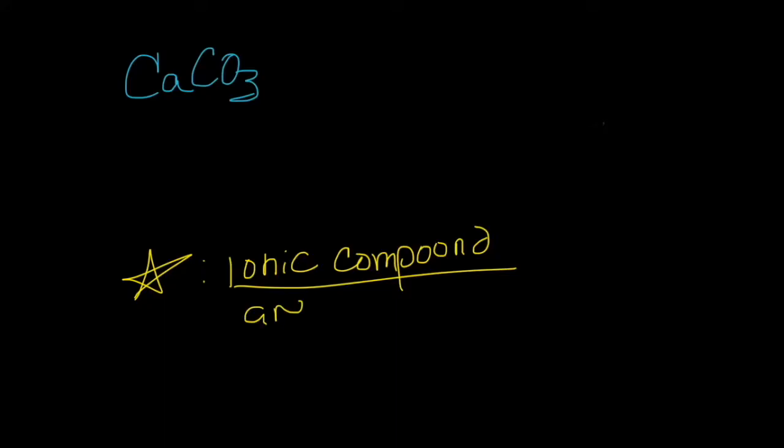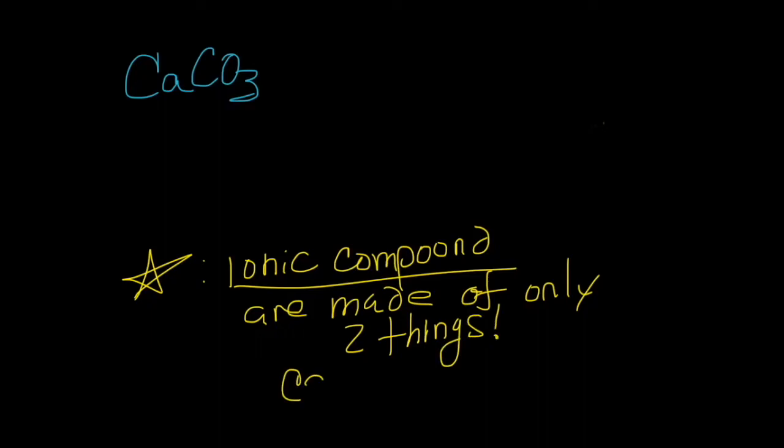Let's try a practice problem. We'll start with CaCO3. A lot more letters than we're used to, but don't panic. Something you need to keep in mind: ionic compounds, any type of ionic compound, are made up of only two things. A cation and an anion. That's it. So no matter how many letters are there, if it's an ionic compound, it's a cation and an anion. Start by looking at the first thing written, CA. Is that a cation? Is it a metal? Yes. So it's a cation. Which means everything else is an anion. We start by naming the cation, which is calcium.